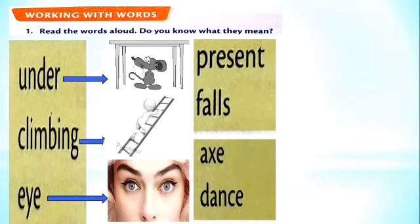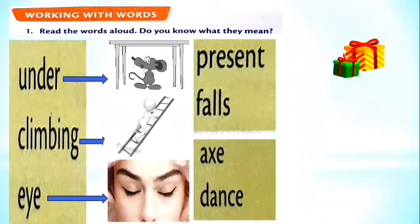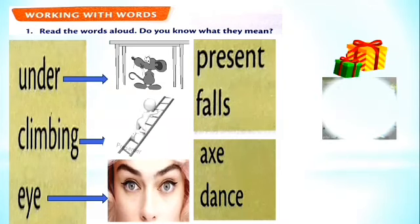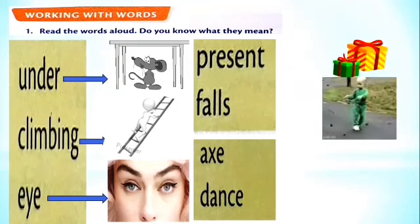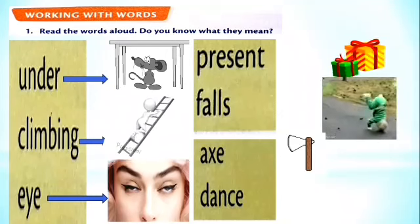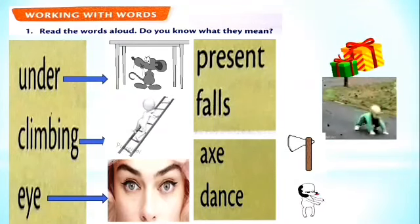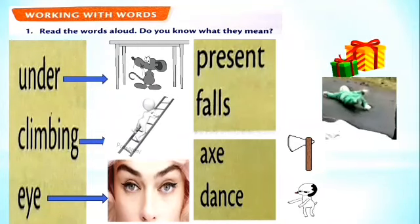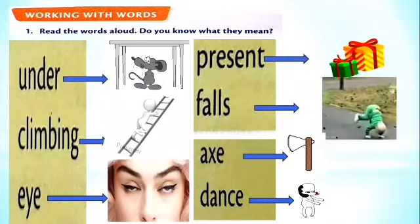Next words: present, falls down, axe, and dance. Present has two meanings - present means now, the present time, and also present means a gift. In the story Prem Stream, it has the second meaning - a gift that we give someone in a special moment. Here is a picture of a wrapped gift. Falls down - falling down, going down like this. Axe - it's a tool used to cut something, just like a hammer or knife. And dance - I want to see your dance. When school opens, show me your dance performance!